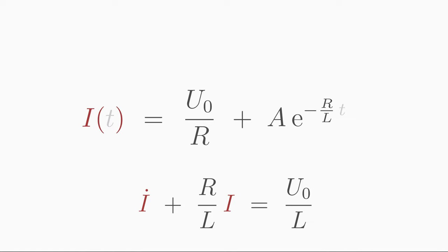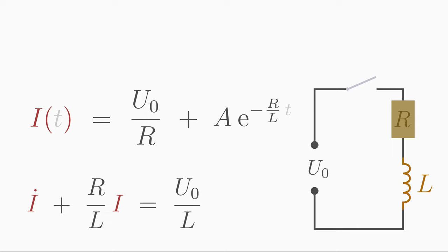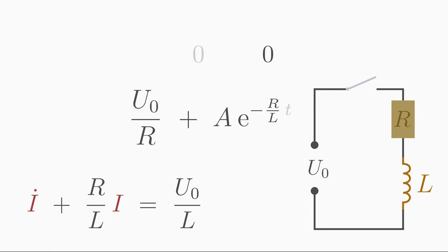To get a solution specific to the problem we need to determine the unknown constant A. For that we need an initial condition. If we say that the time t equals 0 is the time when the current I was 0 because we have not yet closed the switch, then our initial condition is I(0) equals 0. Insert it into the general solution.